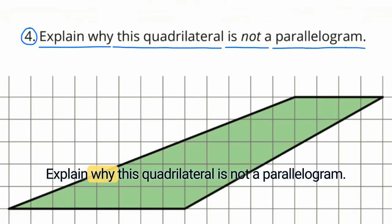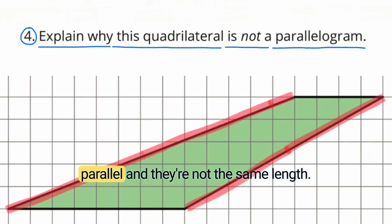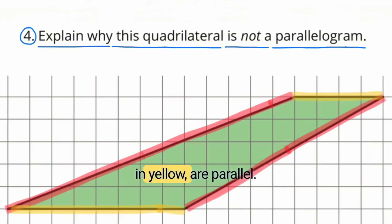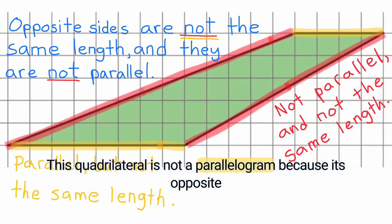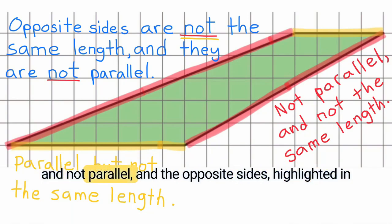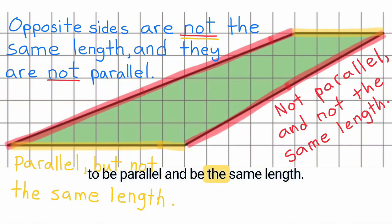Number 4: Explain why this quadrilateral is not a parallelogram. The opposite sides highlighted in red are not parallel and they're not the same length. The opposite sides highlighted in yellow are parallel, however they're not the same length. This quadrilateral is not a parallelogram because its opposite sides highlighted in red are not the same length and not parallel, and the opposite sides highlighted in yellow are not the same length.